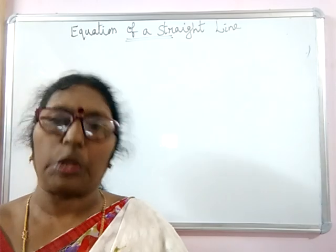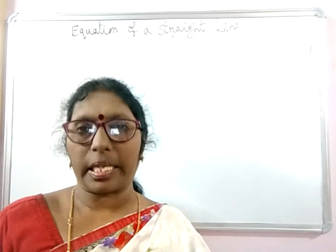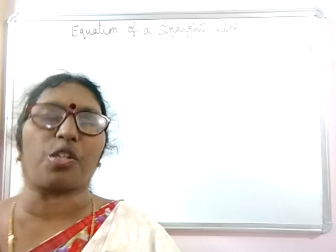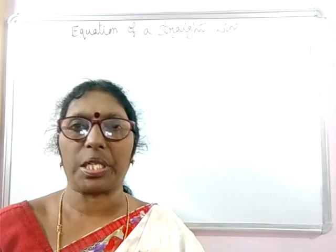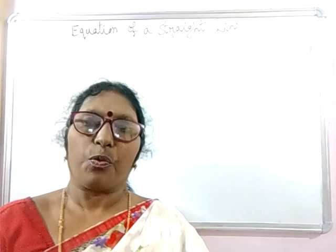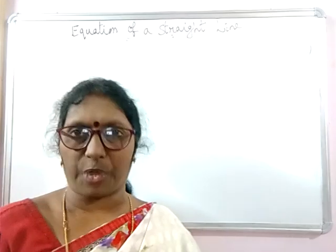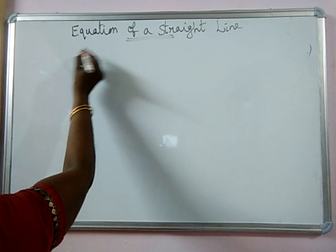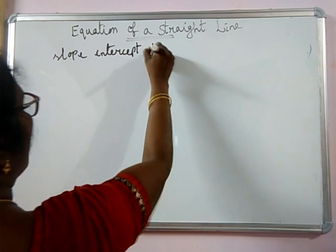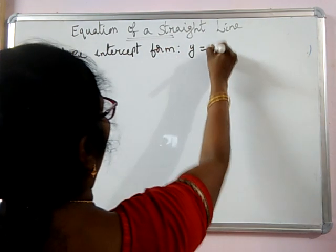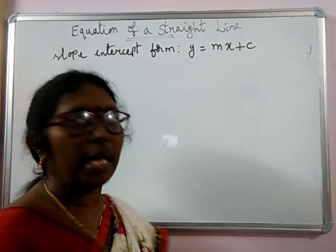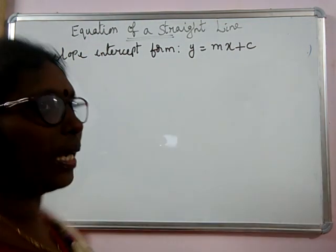Already we have learnt in two classes what is inclination of a line, what is the slope of a line, and what are the different forms of finding the equation of a line. You have also learnt the formula for finding the equation of a line when you know the slope and y-intercept — that is the slope-intercept form, y = mx + c, where m is the slope and c is the y-intercept.